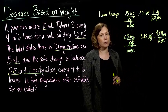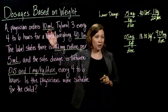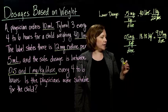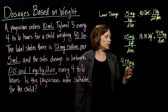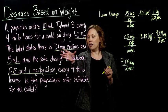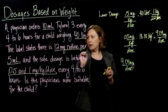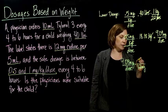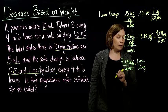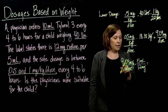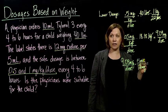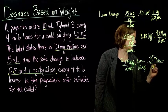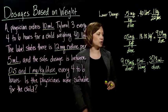We know how many milligrams per dose, but the physician ordered things in terms of milliliters, so we need the lower dosage in milliliters. We take 9.09 milligrams per dose and use the label: 12 milligrams of codeine per 5 milliliters. We put milligrams on the bottom and milliliters on top so milligrams cancel, giving us milliliters per dose. We multiply 9.09 by 5, then divide by 12, and get 3.78 milliliters per dose — that's the lower safe dosage for our 40-pound child.